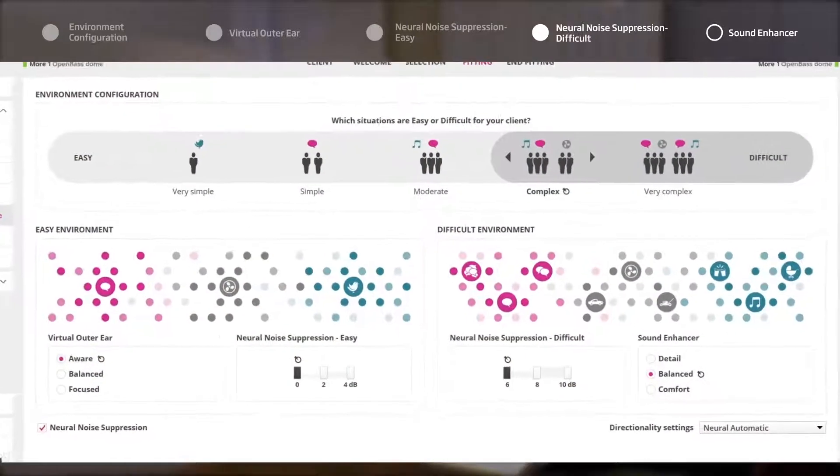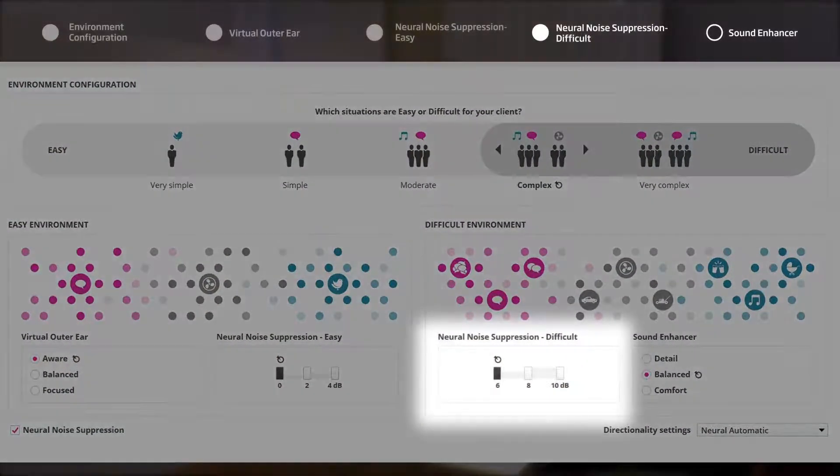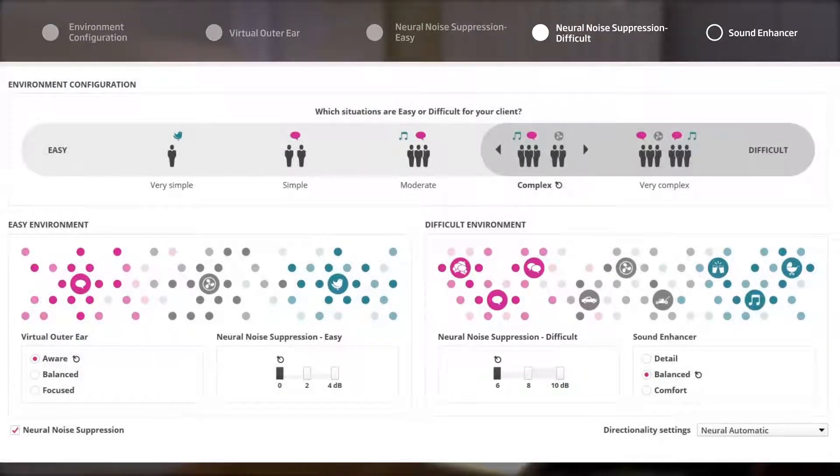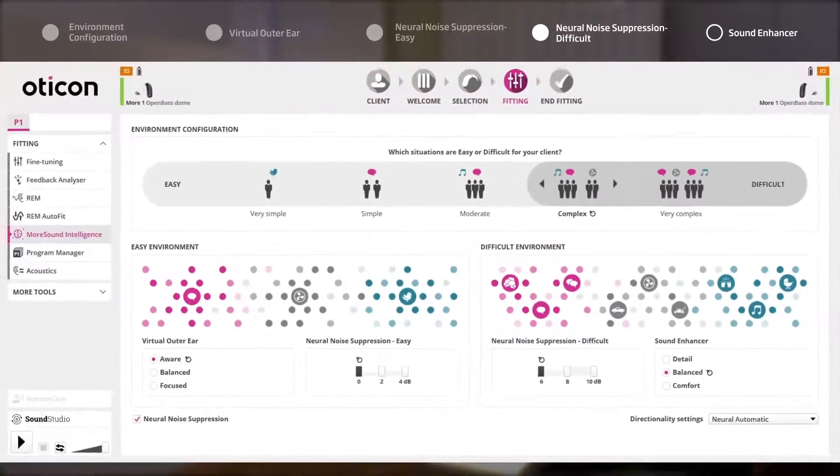Six decibels of Neural Noise Suppression has been selected for this client. If the listening situation is deemed difficult, the Neural Noise Suppression will be applied by a maximum of six decibels.